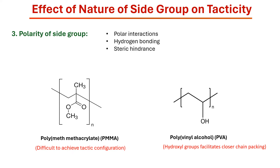These interactions might stabilize or destabilize the spatial arrangement of side groups in the polymer chain, which in turn affects the crystallinity and physical properties of polymers. An example is PMMA.